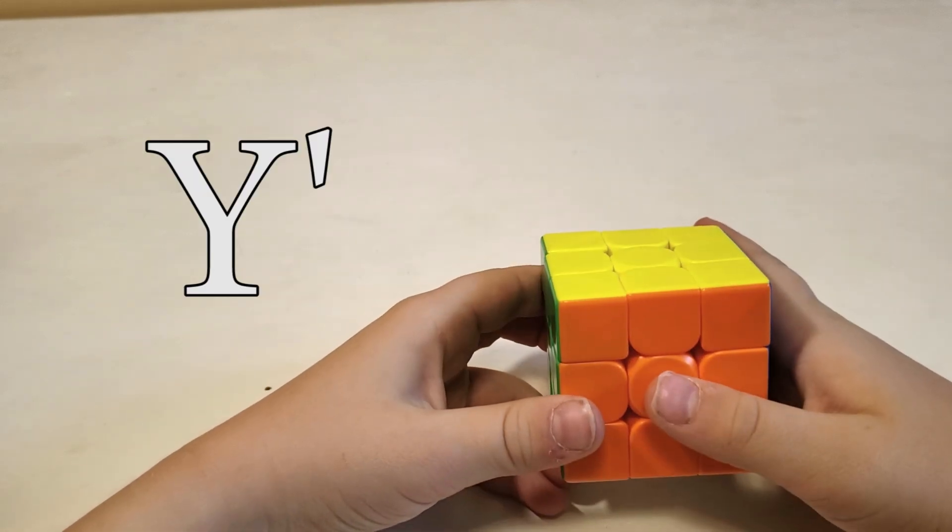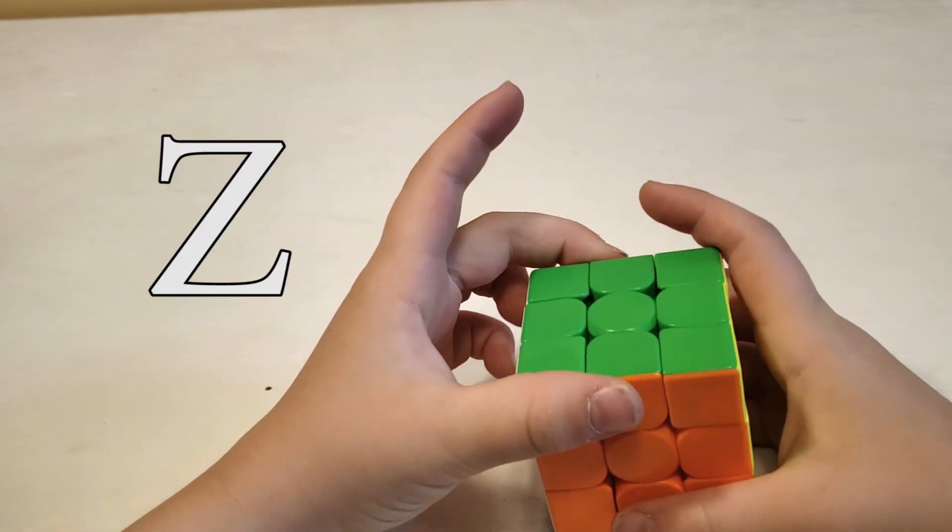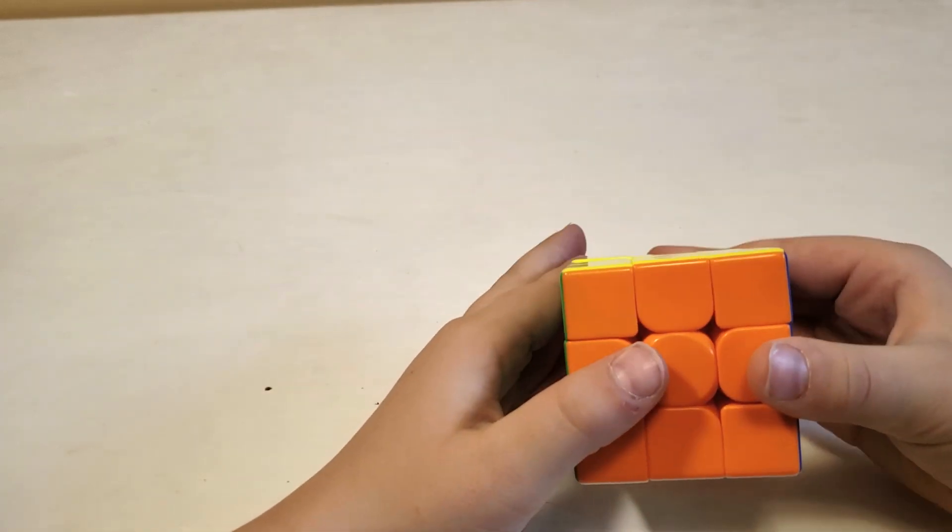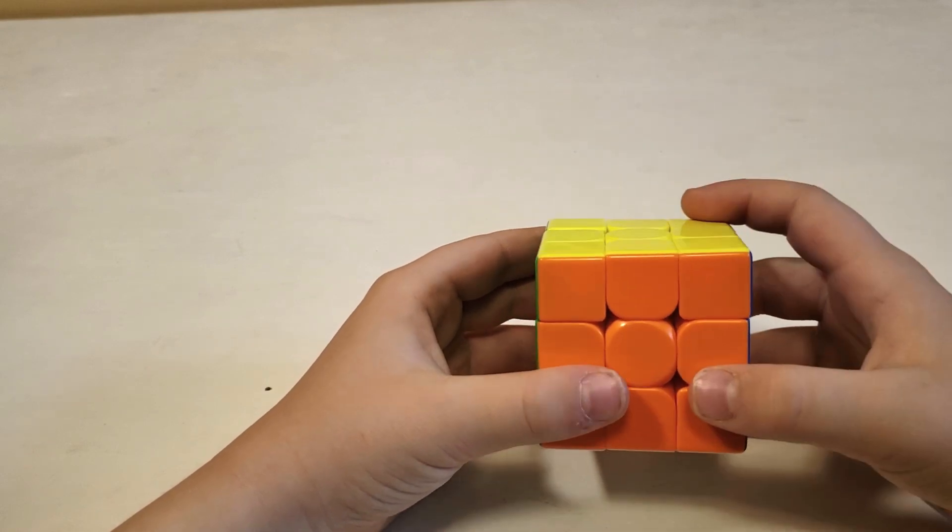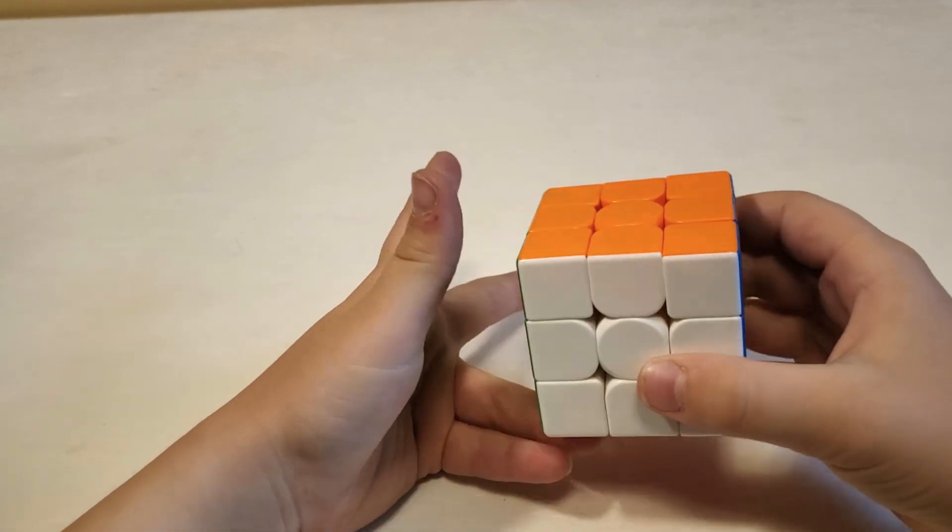And y prime, then we'll finally do z and z prime. How I remember all these is: when I do an x, I just remember doing R. I turn three layers—one, two, three. When I turn three layers, I do a cube rotation.